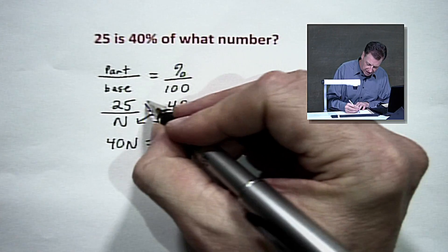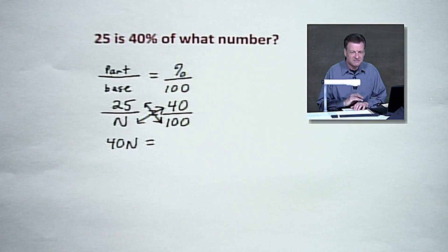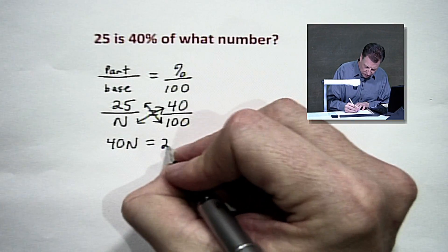Cross multiply the other way. Let's go back a little bit. And that will give us 25 times 100. Just add a couple of zeros there. 2,500.